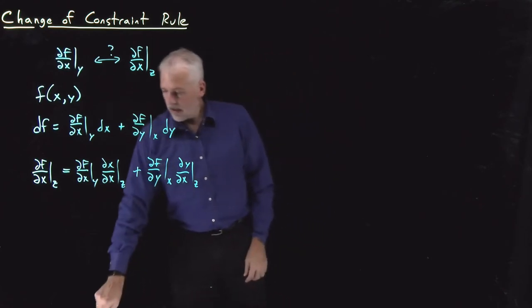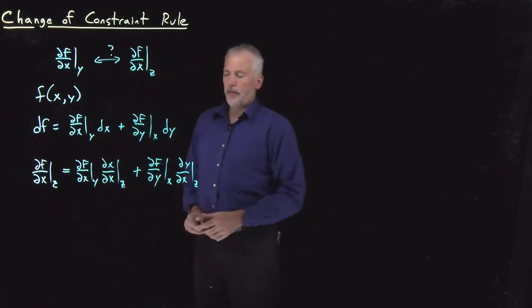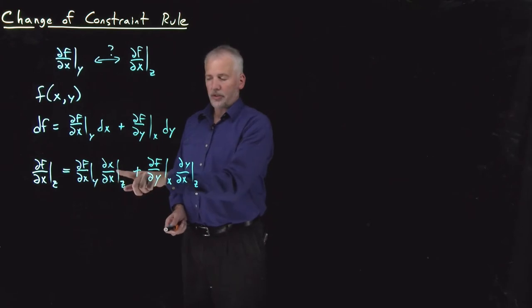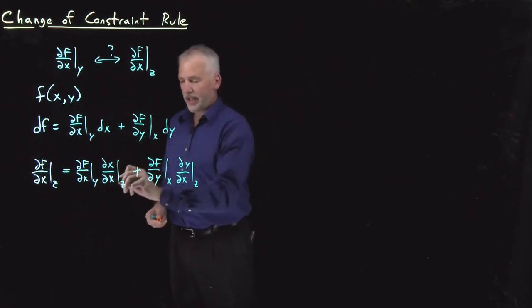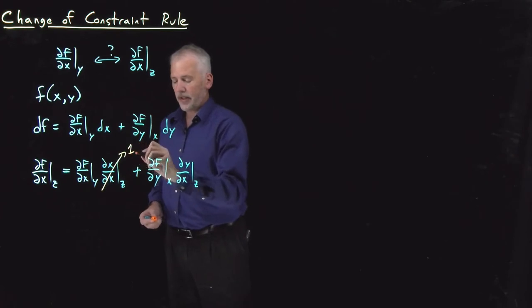One of these derivatives, we know the value, the answer to, dx/dx at constant z, as x changes, x changes by the exact same amount, so that derivative is equal to 1.